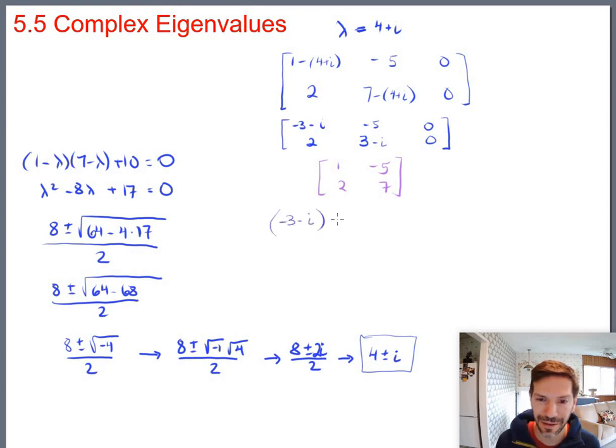But I'll just use the top row. So let's translate this back. Negative 3 minus i times x1 minus 5 times x2 equals 0. And the other equation, we'll just say x2 equals x2 because that variable is free. But let's finish solving the first equation for x1.